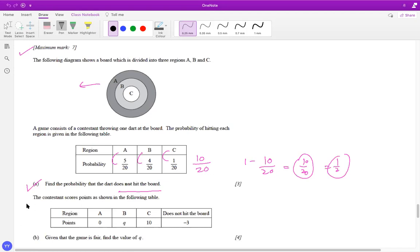So now they're saying that the contestant scores points as shown in the following table. If they hit in region A, they get zero point. So probability if I hit in region A is 5 over 20. Probability if I hit in region B is 4 over 20. Probability if I hit in region C is 1 over 20. And probability of not hitting the board, you're going to lose three points, is basically 10 on 20. That's your half.